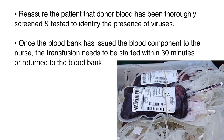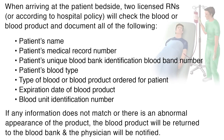Once the blood bank has issued the blood component to the nurse, the transfusion needs to be started within 30 minutes or returned to the blood bank. When arriving at the patient bedside, two licensed RNs — or according to hospital policy — will check the blood or blood product and document all of the following: patient's name, patient's medical record number, the patient's unique blood bank identification band number, the patient's blood type, the type of blood or blood product ordered, the expiration date of the blood product, and the blood unit identification number. If any information does not match or there is an abnormal appearance of the product, the blood product will be returned to the blood bank and the physician will be notified.